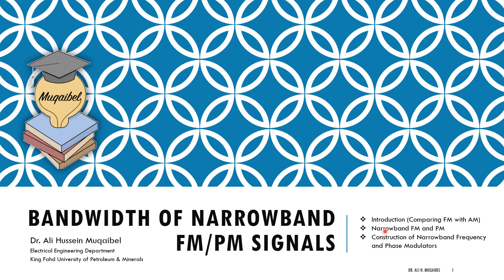Let's look at the bandwidth of narrowband FM and PM signals — the bandwidth of angle modulated signals. We'll start by comparing FM with AM, then look at narrowband FM and PM, and finally look at the construction of narrowband frequency and phase modulators. Our focus is on narrowband FM.